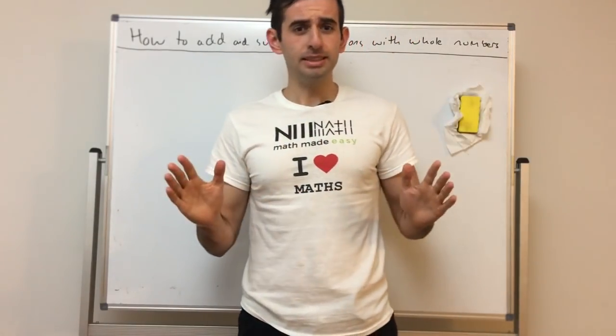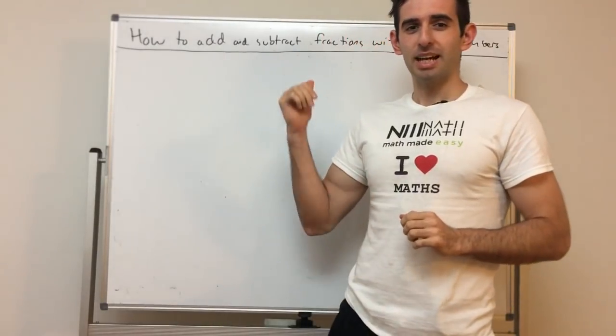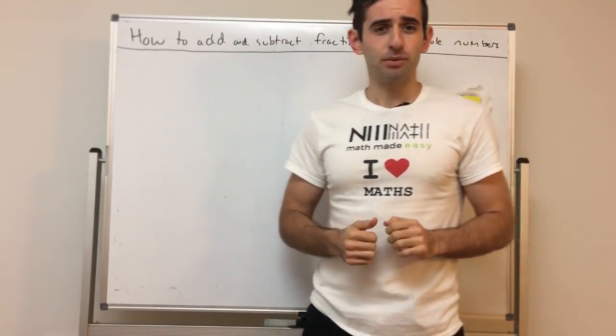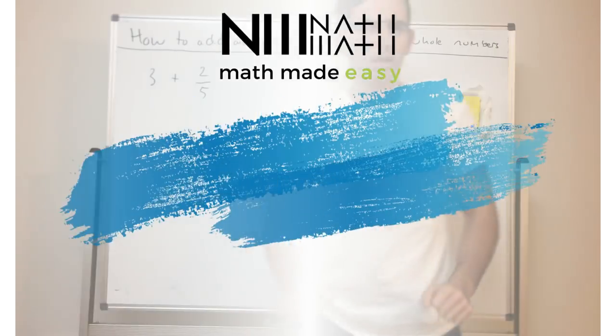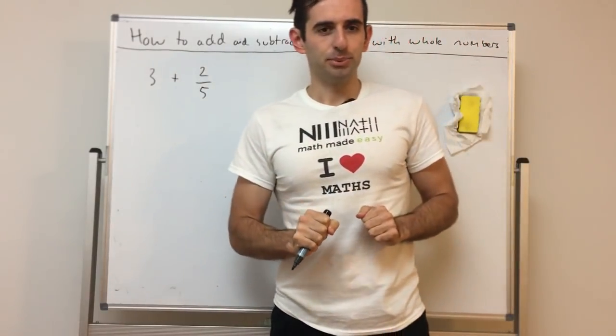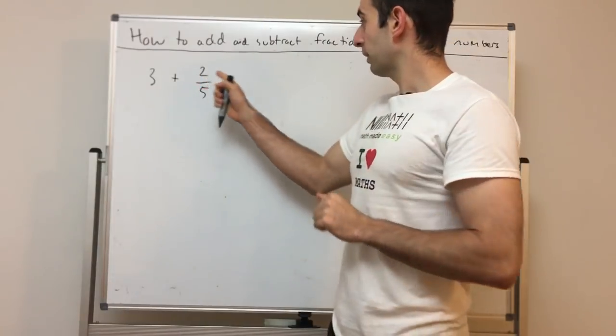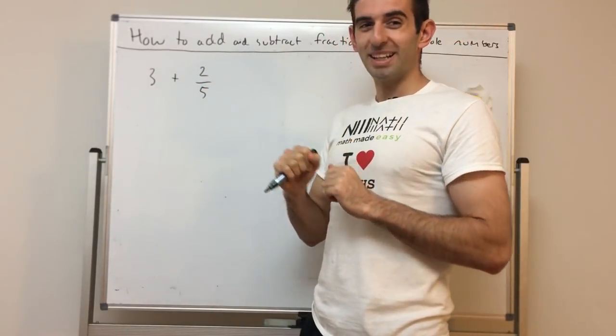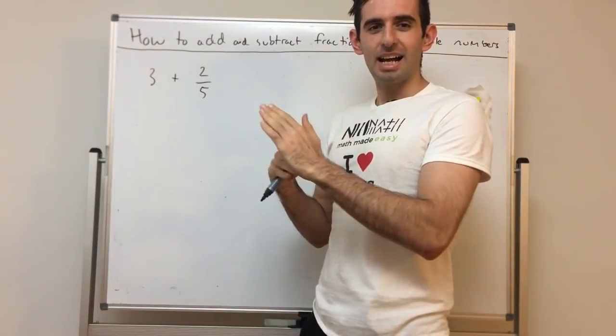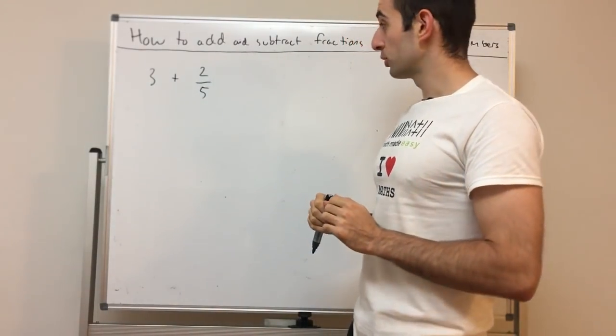I'll show you how simple it is, so make sure you stick to the end to see how quickly we can add and subtract fractions with whole numbers. Alright, let's begin with a simple example: 3 plus 2 over 5. What you'll notice is this is actually the exact same process as converting mixed numerals to improper fractions.